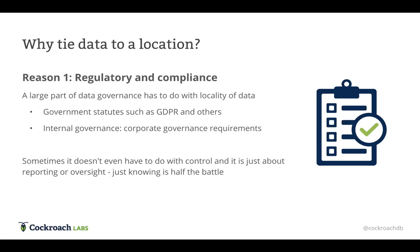You also can't underestimate the effect of internal governance. A lot of organizations have rules around their own data and where it can actually be stored and who has access. We have security and access rules, but also rules around where we store things. Sometimes this isn't about control — it's about reporting and oversight as well. Just knowing that data is in a particular location is often half the battle. So the number one reason is regulatory and compliance, which has several different levels.